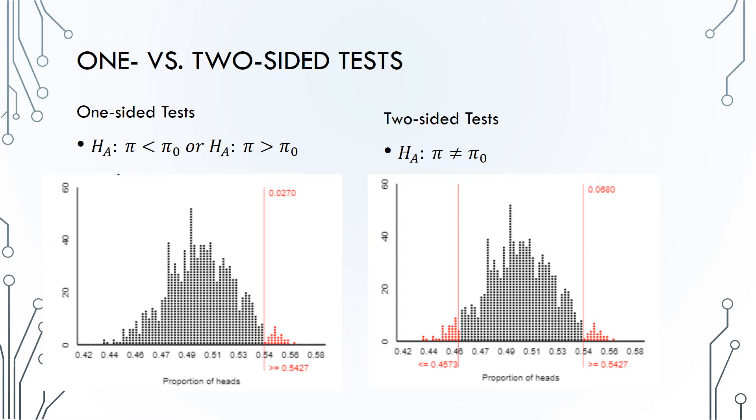In this exploration, we again start at the observed statistic, 0.5427. Since this is on the right side of the plot, we start counting at our observed statistic and go to the right, the same as we did in the right-sided test. But because this is now a two-sided test, we have to count dots in the other tail as well. So first, find the distance from the null hypothesis, 0.5, to the observed statistic, 0.5427. That distance is 0.0427.